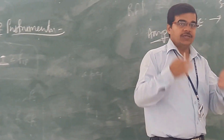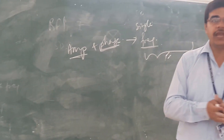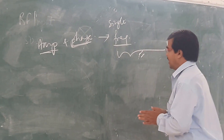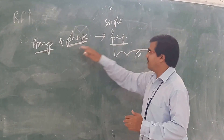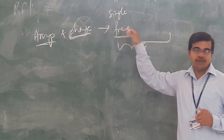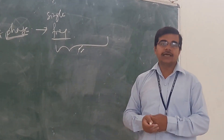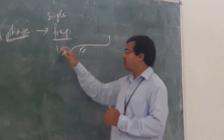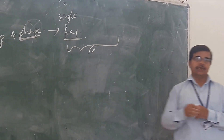So the difference between your network analyzer and slotted line is that the slotted line provides amplitude and phase for a single frequency, whereas the network analyzer can provide the amplitude and phase for a range of frequency signals.